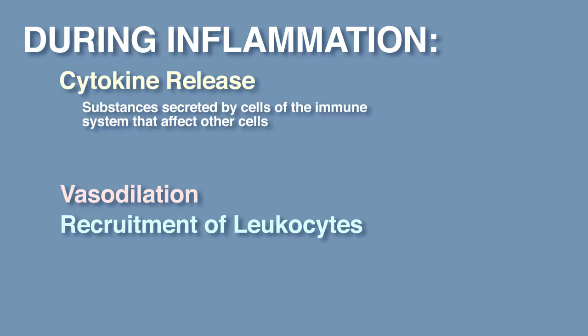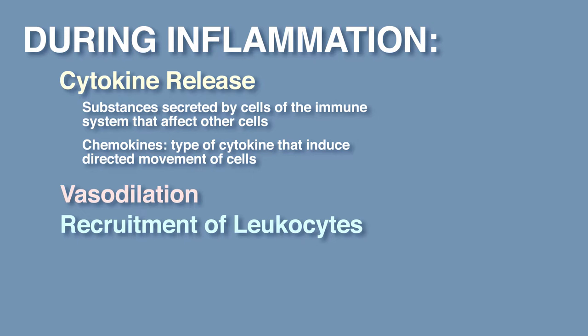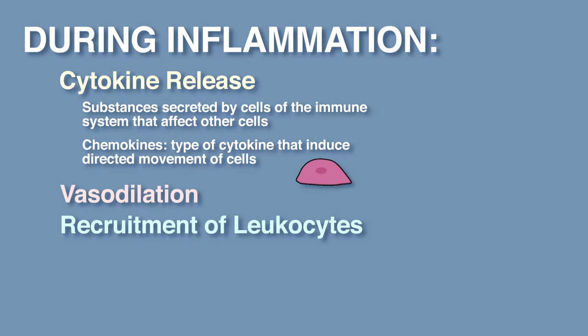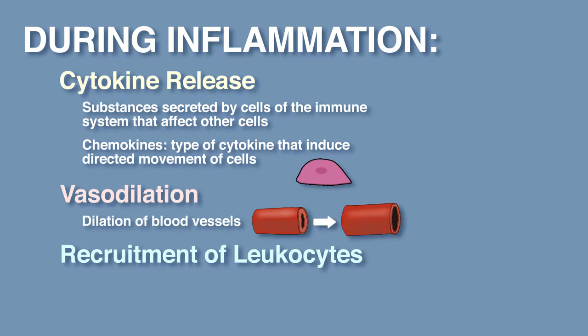Cytokines are substances secreted by cells of the immune system that affect other cells. Chemokines are a type of cytokine that induce directed movement of cells. Vasodilation is the dilation of blood vessels.